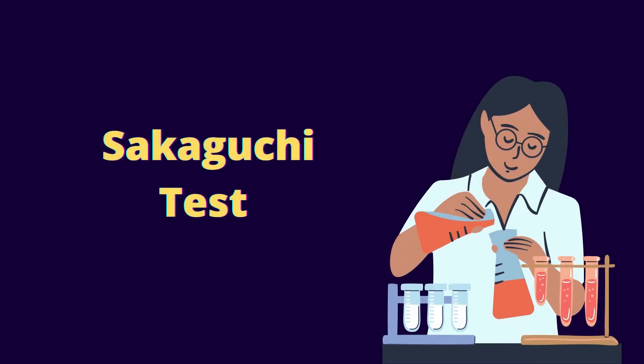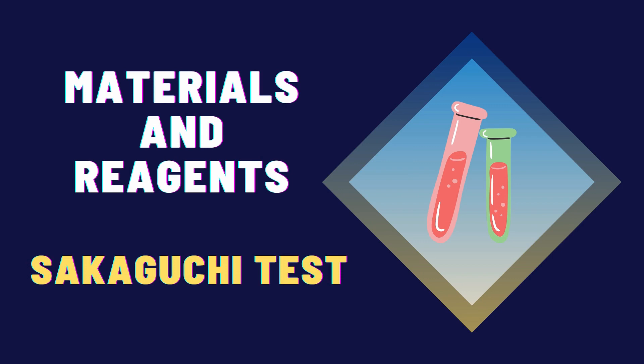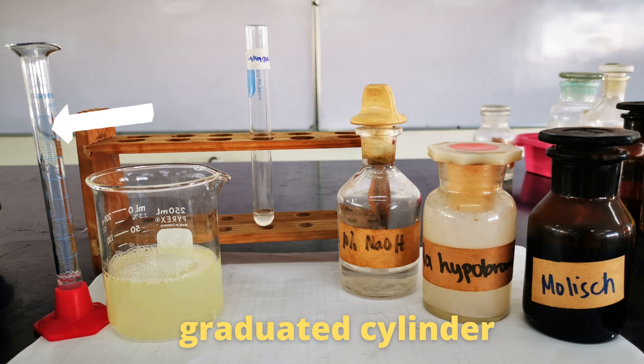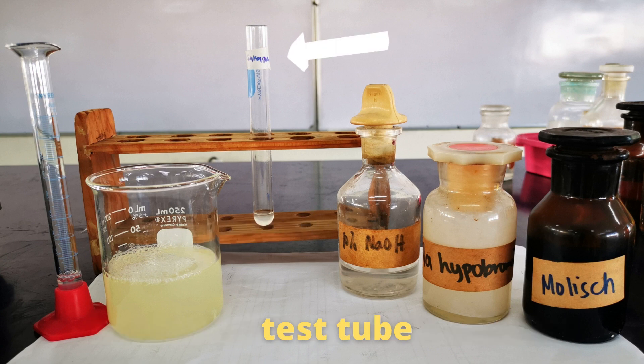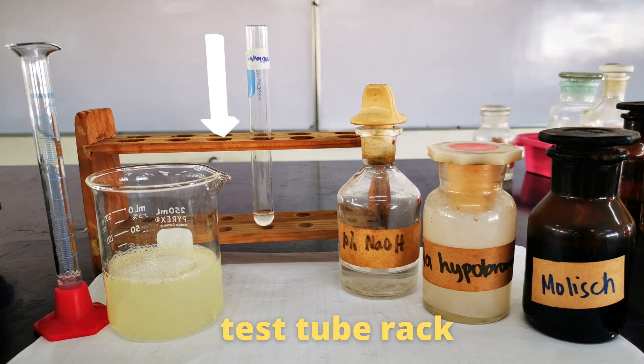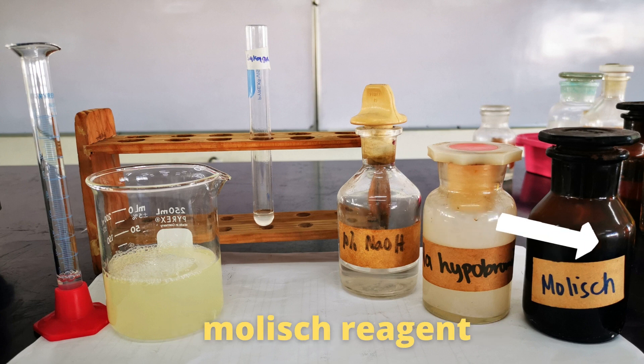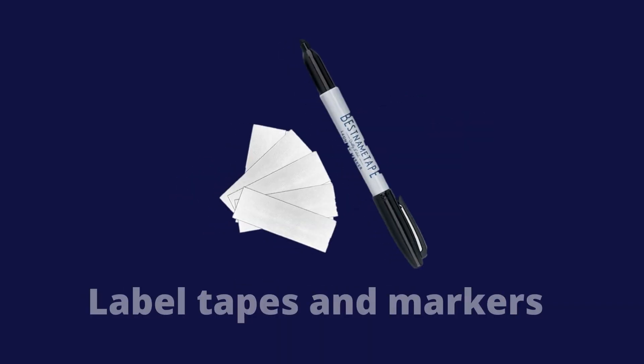And lastly, the Sakaguchi test. These are the materials and reagents for Sakaguchi test: graduated cylinder, beaker with albumin solution, test tube, test tube rack, 10% sodium hydroxide, sodium hypobromide, Molisch reagent, droppers, and label tapes and markers.